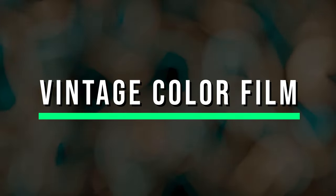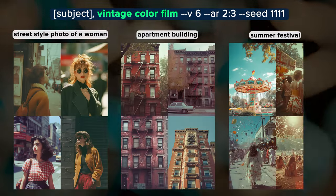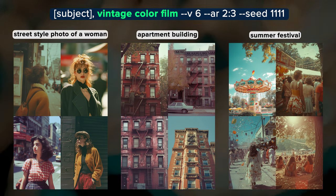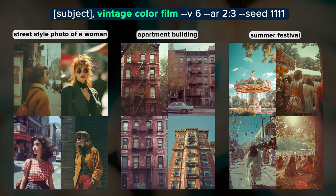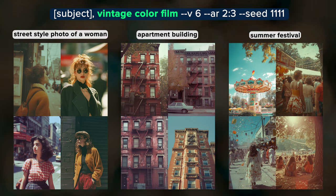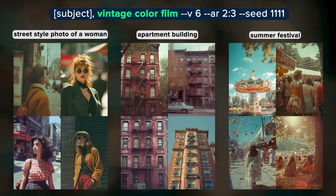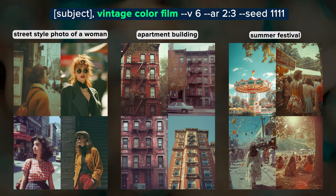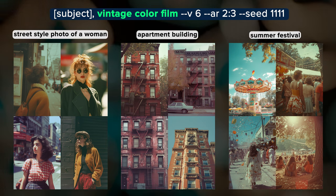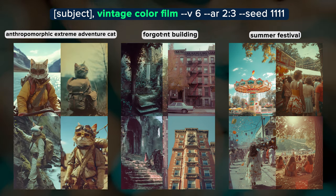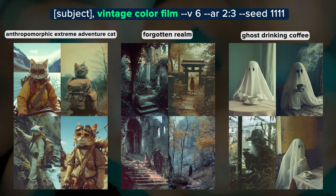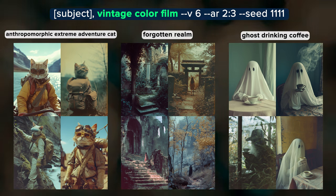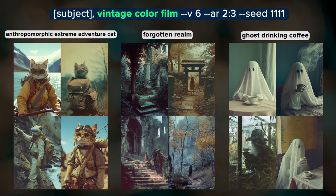Vintage Color Film refers to older film stocks used for color photography, with distinct characteristics that evoke a nostalgic and retro feel. The effect is similar to 35mm color film, but the colors are a bit more muted and it leans more into the cyan-orange color palette. You can see how the word 'vintage' also affects the semantics of the images with vintage fashion and that car in the upper-right apartment building image. Our adventure cat is out there living his dreams, and we got ghosts drinking coffee this time, which we didn't get with 35mm color film.